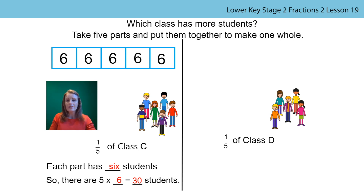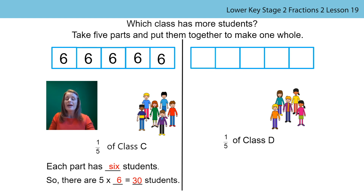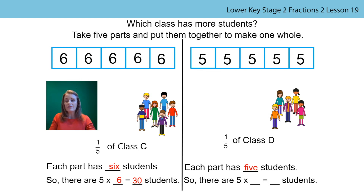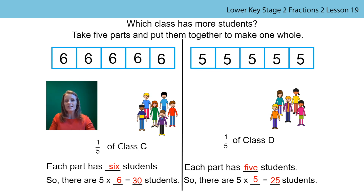Now I did the same for Class D. I knew that I needed five equal parts, and in order to work out how many students there are in the whole, I need to look at each part. We knew there were five students, so I put a five in each of the parts. This time I've got five equal parts, each with five in — so there are five times five, which is 25. There are 25 students in Class D. So which class has the most students? Of course it's Class C, because we know that 30 is greater than 25, or we could say 30 is more than 25. I hope that makes sense.